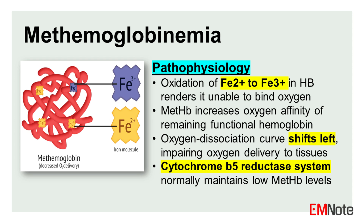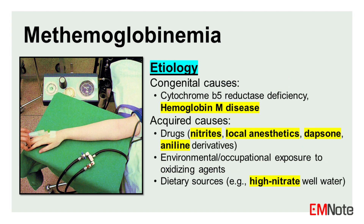Under normal circumstances, there is a constant process of methemoglobin formation and reduction. The primary physiological mechanism for methemoglobin reduction is the cytochrome B5 reductase enzyme system, which utilizes NADH as a cofactor. This system efficiently maintains methemoglobin levels within the normal range of 1-2%.